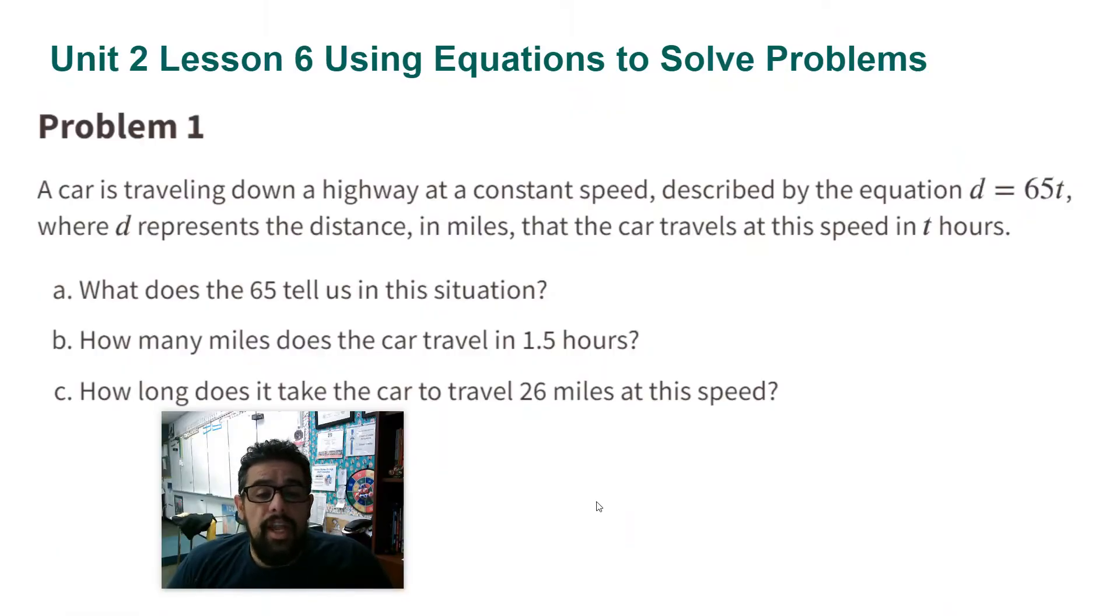A car is traveling down a highway at a constant speed described by the equation D equals 65T, where D represents the distance in miles that the car travels at this speed in T hours. So here we have the equation. We have what every variable is. D is the distance in miles, and T is the time in hours.